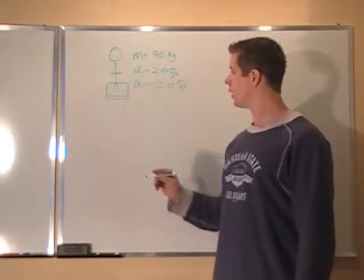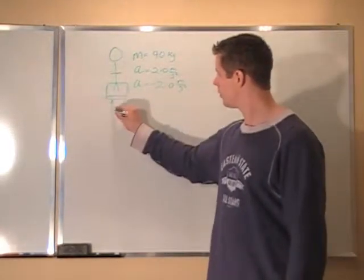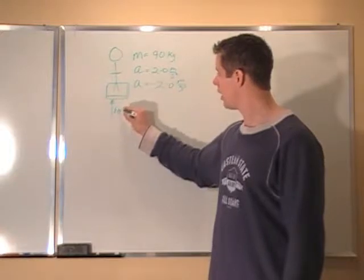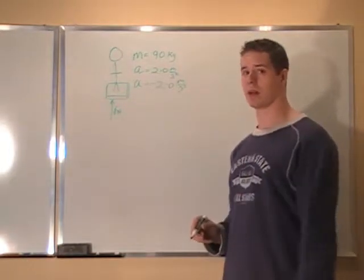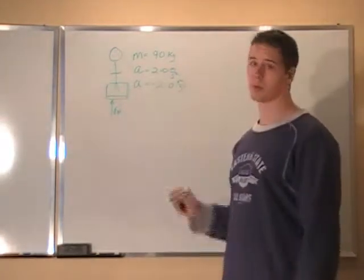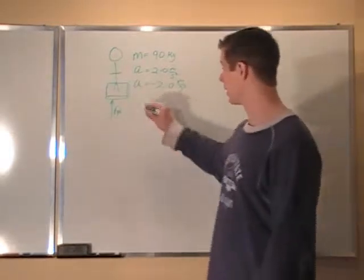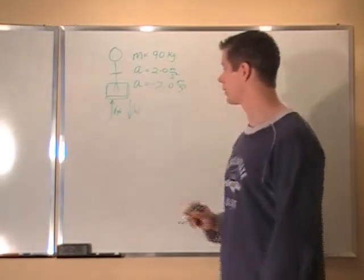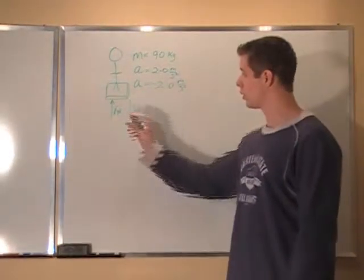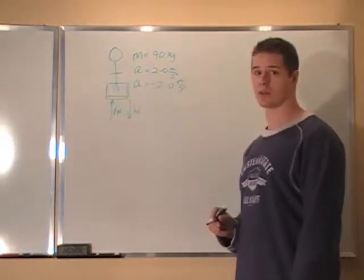If we put some forces on him, we have our normal force acting up, and that's the scale pushing back up against the guy, and so that's what we're looking for, because that's going to be the reading. We also have the weight acting downward. So we're going to look for the normal force, which is going to be our answer.